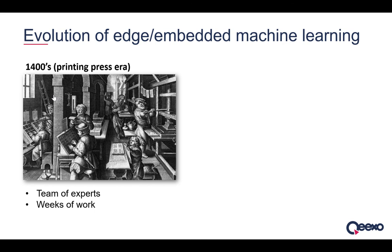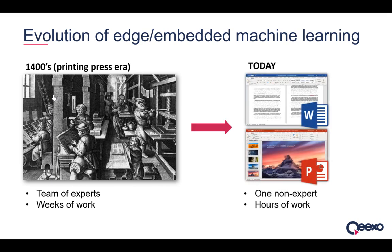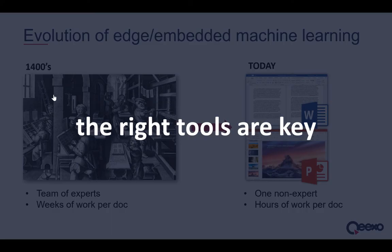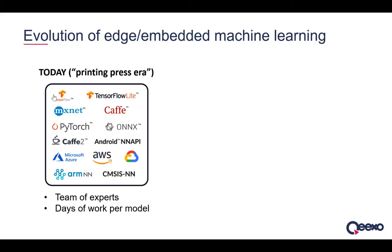I like to think of the state of machine learning tools with a historical analogy. In the 1400s, printing presses came into use, and these were far better than human transcription. But it still required a team of well-trained experts working with specialized tools for weeks to create a single document. Today, with a word processor, a skilled computer user — certainly not a professional — can produce a document or presentation like this within hours. Today's machine learning tools are much like a printing press: far better than hand-coded heuristics, but still requiring a team of experts and many days of work, if not weeks, to build a commercial model.